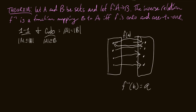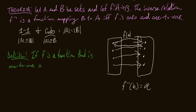One quick definition before I go. If f is a function that is one-to-one and onto, we say that f is a bijection. A function is a bijection if and only if it is one-to-one and onto. Bijection is a word you're going to hear all the time going forward — it's much easier than saying one-to-one and onto every time.